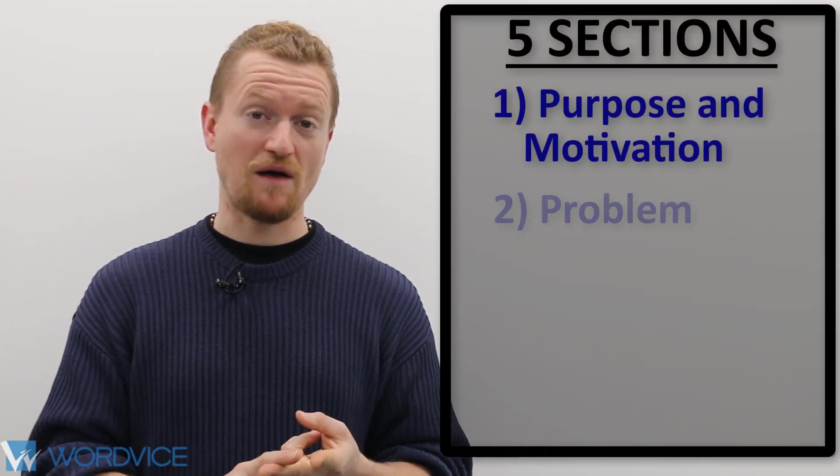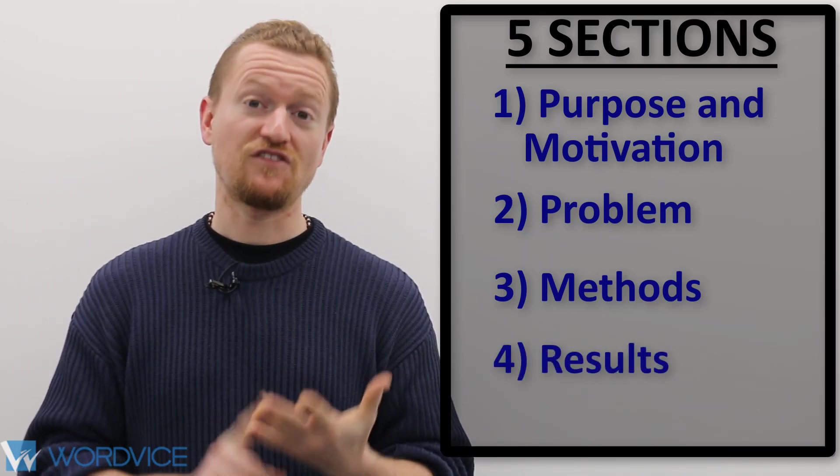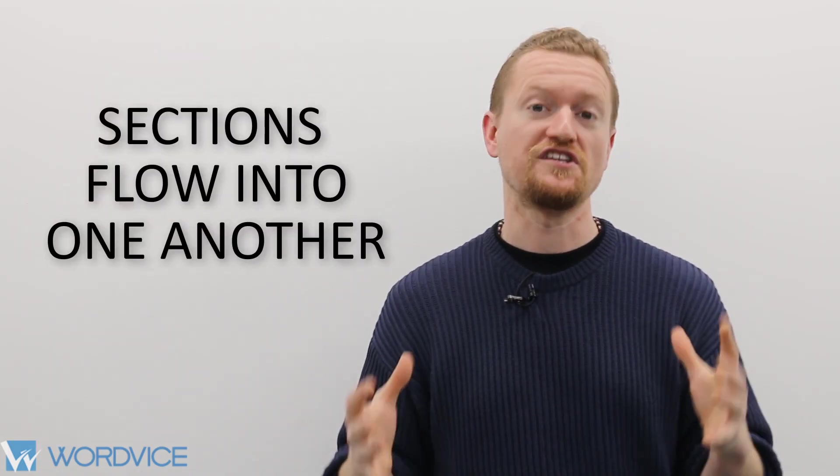Now let's talk about the structure of the abstract. An abstract is essentially a summary of your paper and contains five sections. These sections are the purpose and motivation, the problem, the methods you used, the results, and the conclusion. As abstracts are almost always one long paragraph, these sections will flow into each other and create a unified holistic effect.